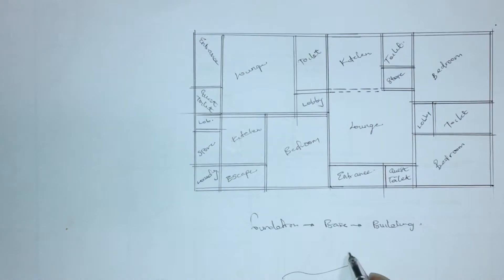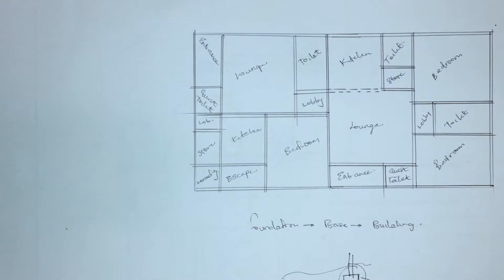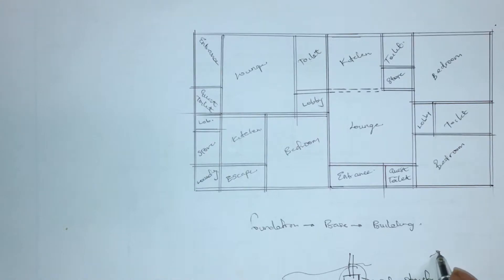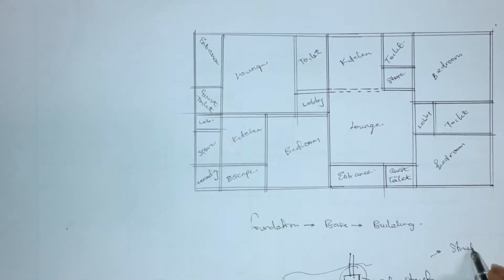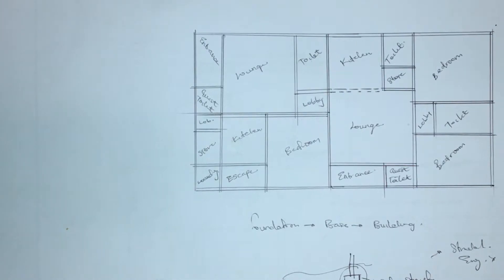If this is the ground, then you have something holding your building firm to the soil — that is known to be the foundation. The foundation is known to be a substructure because it is not seen; it sits within the soil. The structural engineer determines the kind of foundation type you're going to be using, whether a pile, a strip, and so on.